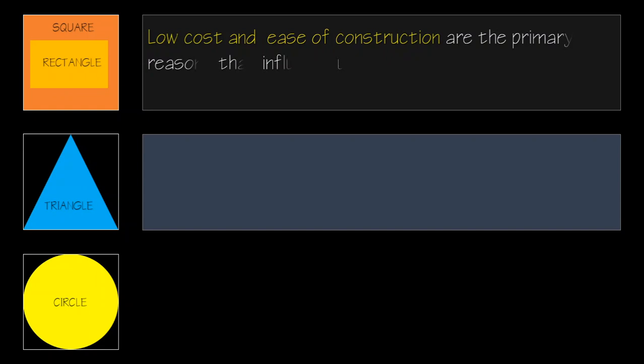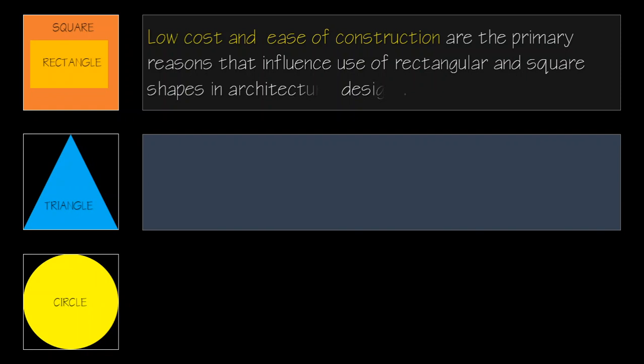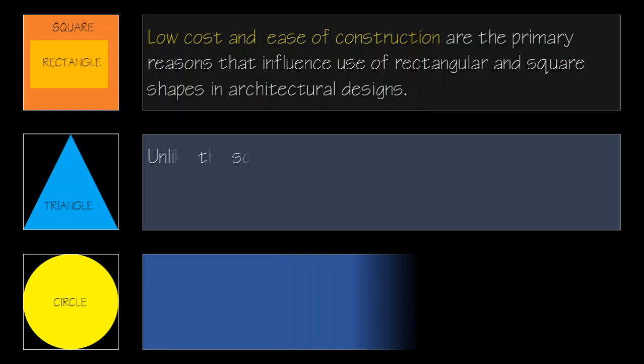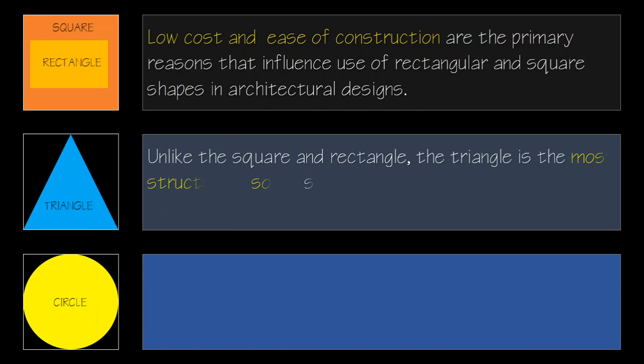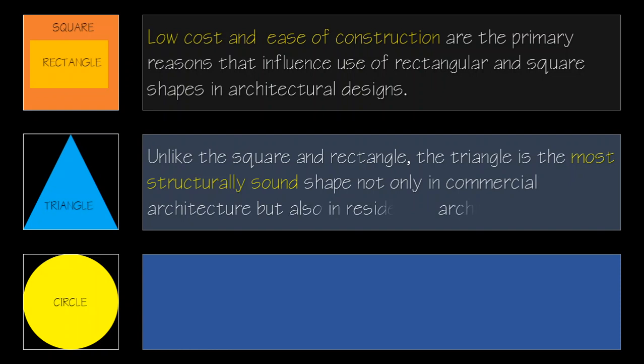Let us start with the square and rectangle. For the square and rectangle, low cost and ease of construction are the primary reasons that architects actually go for. Low cost and ease of construction mean a lot when it comes to the square and rectangle in architecture.